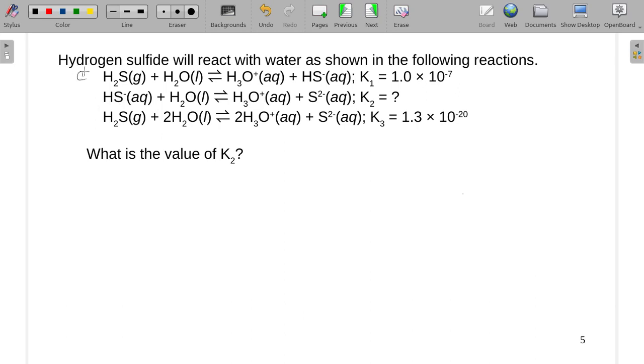So these are two steps in that overall process shown there. So this bottom equation really is the first two equations added together. The HS's would cancel. You'd have two waters giving you two H3O⁺ and then S²⁻.